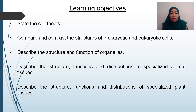Next, describe the structure, function, and distribution of specialized animal tissue. Examples of animal tissue you are going to learn in this chapter are connective tissue, epithelial tissue, muscle tissue, and nervous tissue. And then the last objective: describe the structure, functions, and distribution of specialized plant tissues. Examples of plant tissue you are going to learn are vascular tissue, dermal tissue, and a few others.